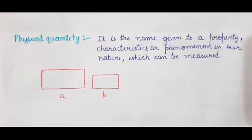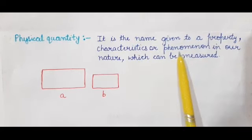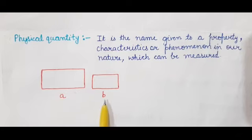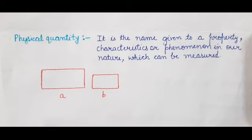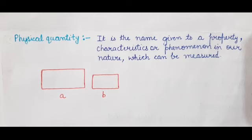What is a physical quantity? It is a name given to a property, characteristic, or phenomenon in nature which can be measured. For example, there are two boxes A and B. If box A is heavier than box B, the physical quantity we are referring to is mass. So A has greater mass compared to B. Mass is an example of a physical quantity — it can be measured.